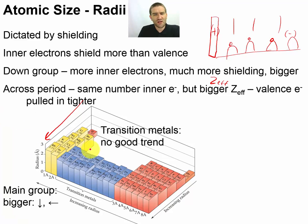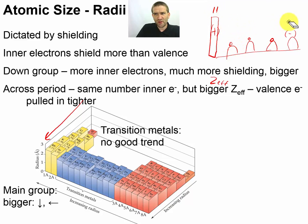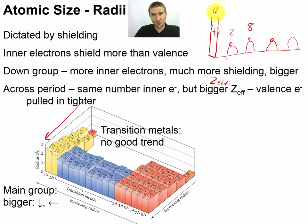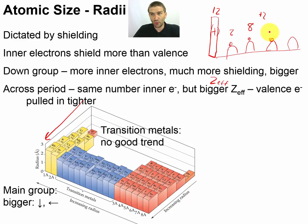Here's the one that's not so intuitive — what about as you're coming across the period? If we're going from sodium to magnesium heading all the way over toward argon: sodium starts with eleven electrons — two in the front row and eight in the next shell, giving ten electrons blocking the view. As that valence electron looks forward, it sees an effective nuclear charge of plus one. Now if a second electron comes in and sits in the same row — that's magnesium with twelve protons — we have the same number of inner electrons in the way, so the effective nuclear charge becomes plus two. Those two outer electrons aren't blocking each other's view, so it's a plus two effective nuclear charge pulling them both in.